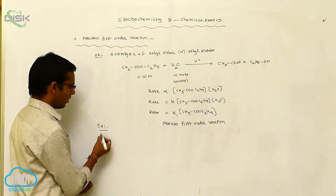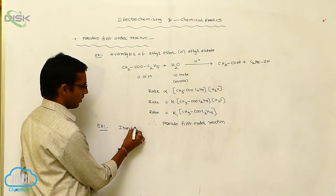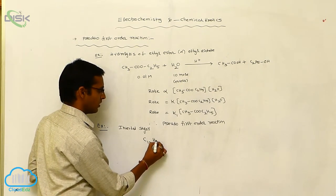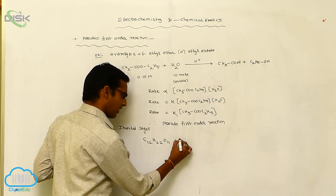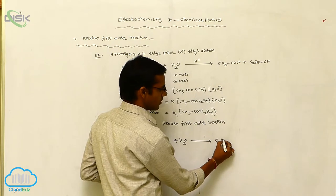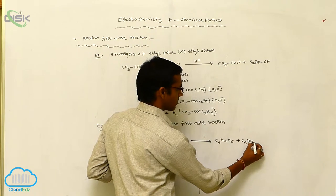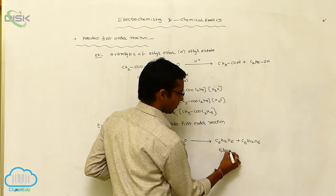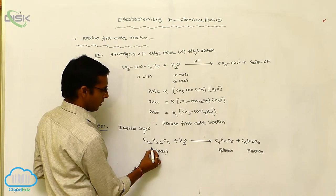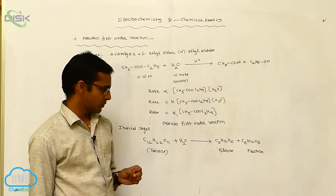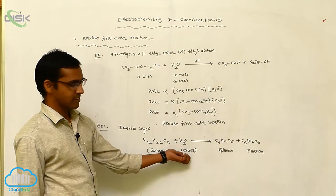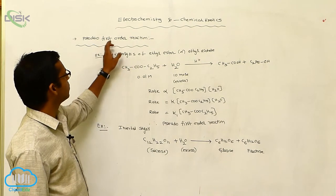Another example for pseudo first order reaction is inverted sugar. Sucrose, with formula C12H22O11, undergoes hydrolysis. Hydrolysis produces two substances: glucose (C6H12O6) and fructose (C6H12O6). The sucrose undergoes hydrolysis to give glucose and fructose. Here, the water molecule is again considered in excess amount, so its concentration changes but does not affect the rate. This is another example of pseudo first order reaction.